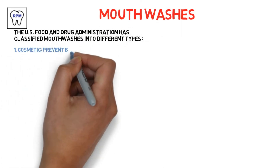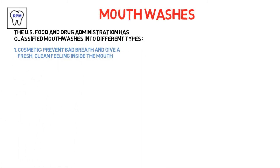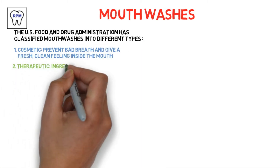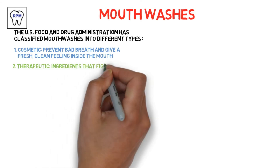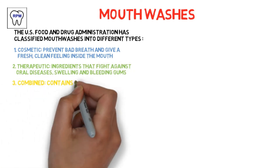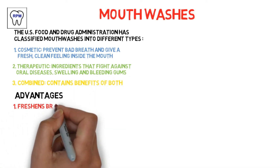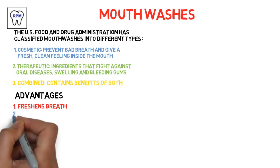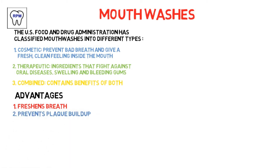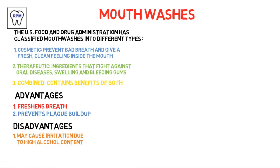Lastly, mouthwashes. The U.S. Food and Drug Administration has classified mouthwashes into different types: cosmetic — they prevent bad breath and keep a fresh clean feeling inside the mouth; therapeutic — ingredients that fight against oral diseases, swelling, and bleeding gums; combination — contains the benefits of both. Advantages: they freshen the breath and they prevent black triangles.